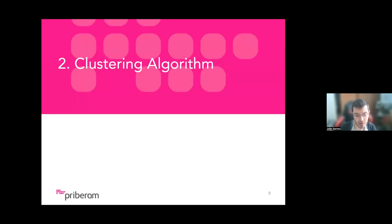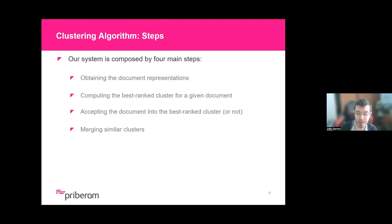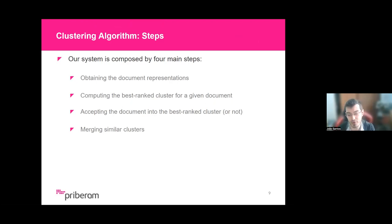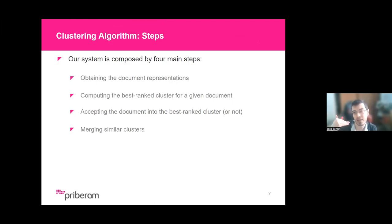Moving on to the clustering algorithm. Our main focus was to depend as little as possible on language-specific features to process articles for a language not seen during training, without a considerable performance loss for the main languages. Our system is composed of four main steps: obtaining document representations, computing the best-ranked cluster for a given document, deciding if a document is accepted by the best-ranked cluster, and finally merging clusters that pertain to the same story and may grow closer in time.